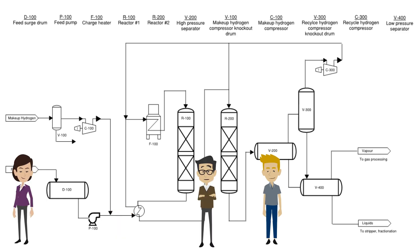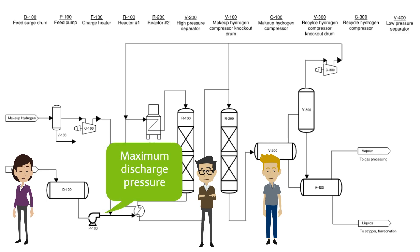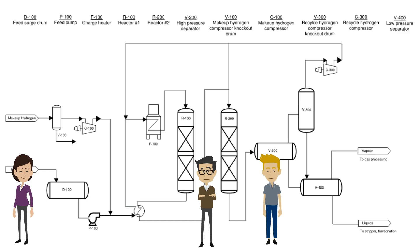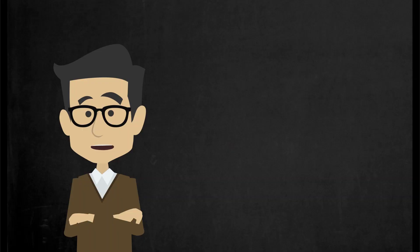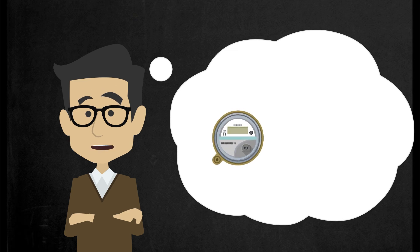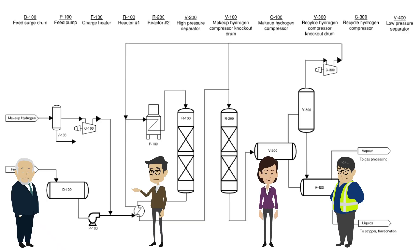From the surge drum, the feed gets pumped out and combined with the make-up hydrogen. We need to understand the maximum discharge pressure of the pump, as well as the maximum operating temperature and pressure of the piping. If the pump is a credible source of overpressure, we need to understand the set point and action of any high pressure shutdowns, or if there is a pressure safety valve. We will need to understand this for any potential pressure sources in the system, including all pumps or compressors.